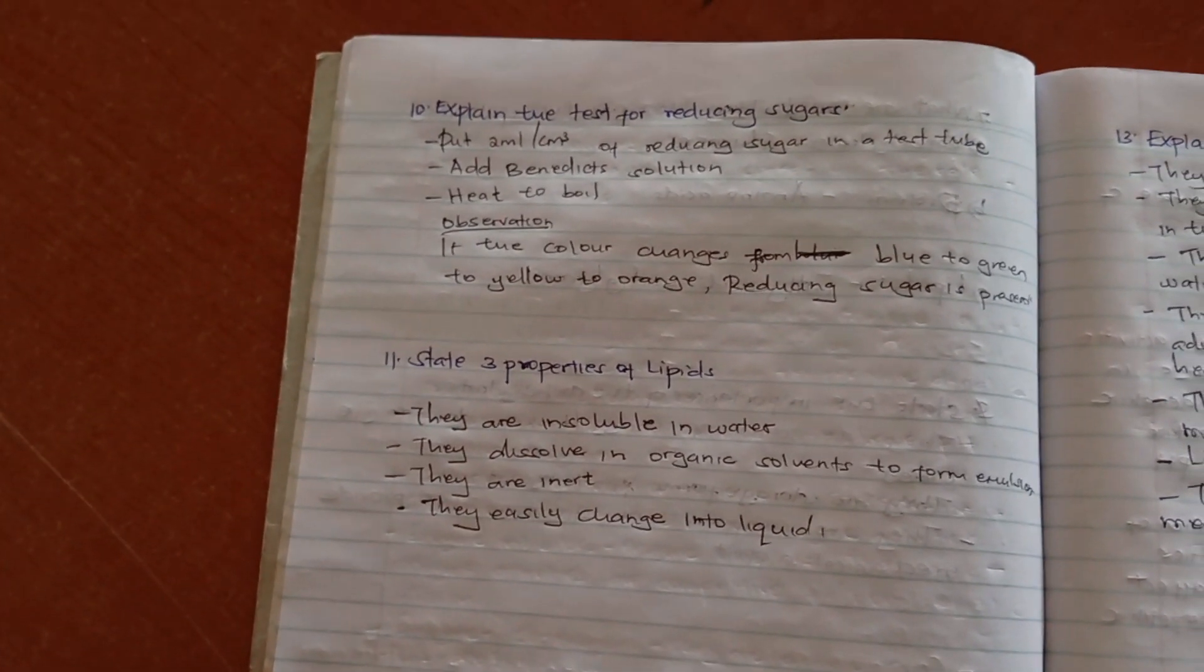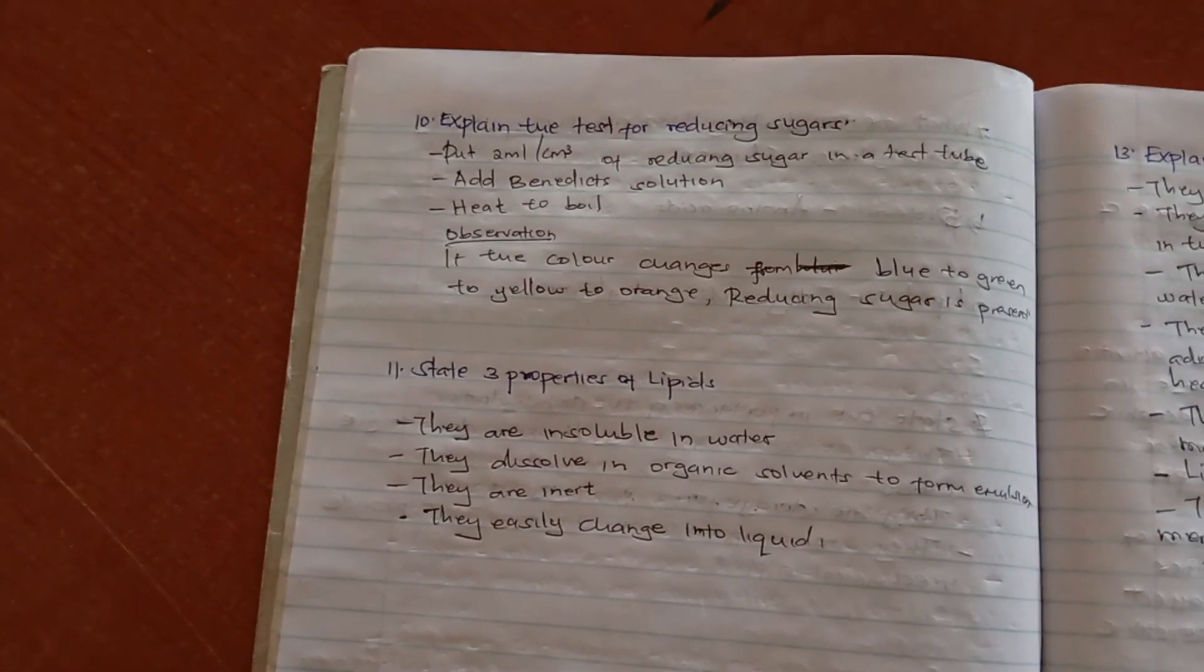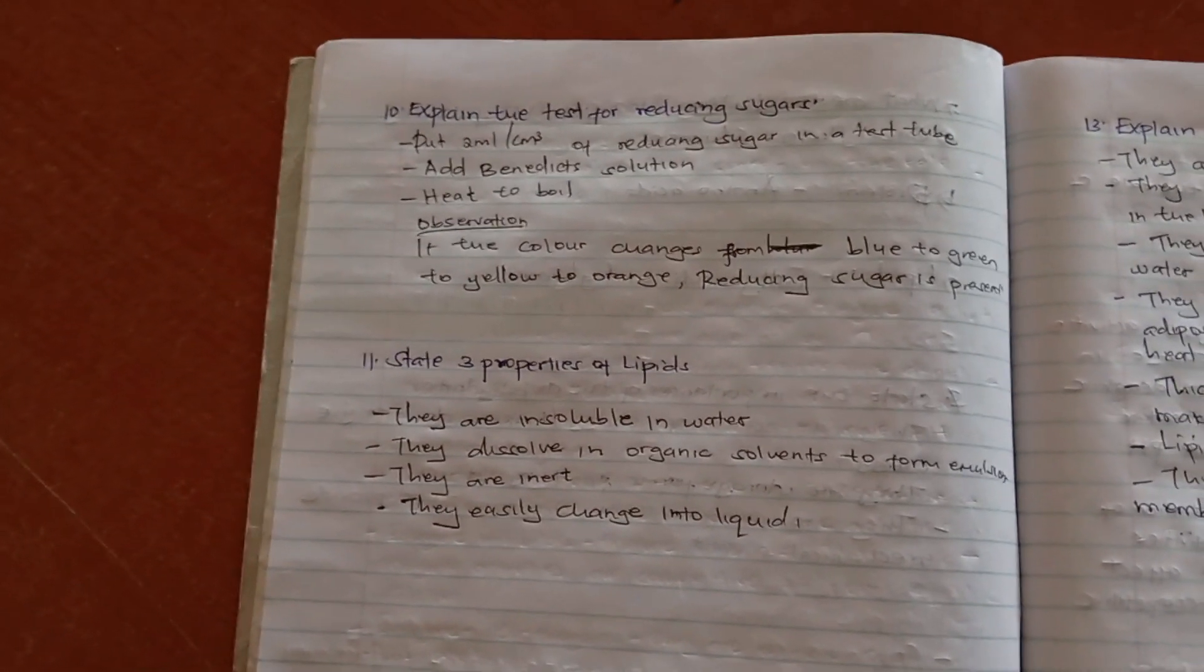Observation, if the color changes from blue to green to yellow to orange, then a reducing sugar is present.